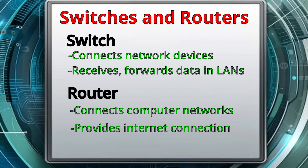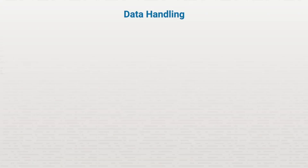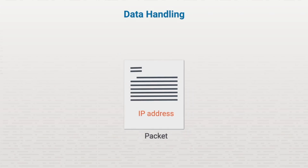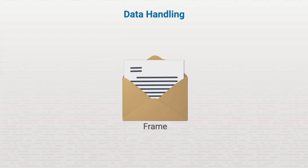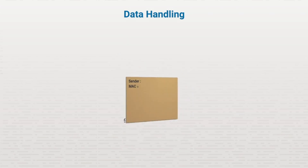Before we go on, let's briefly review how data gets packaged so that it can be sent to and received where you want it to. Data is broken up into datagrams that are placed in a packet, which is then placed in a frame. The frame contains the sender's MAC address and the destination. The packet contains the IP address.